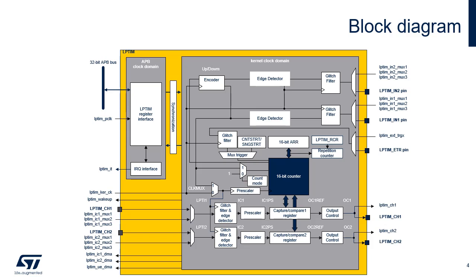The low-power timer features a repetition counter which allows adjustment of the counter rollover. It also features an encoder mode function that can be used to interface with incremental quadrature encoder sensors using the peripheral's LPTIM_IN1_MUX and LPTIM_IN2_MUX inputs to select the direction. These input signals are visible on the upper right of the figure. All timer inputs support a glitch filtering circuitry.